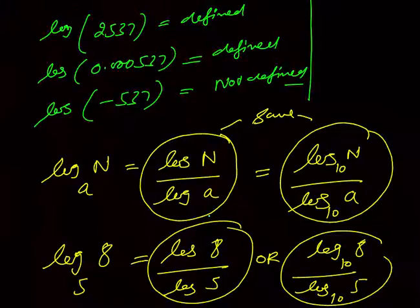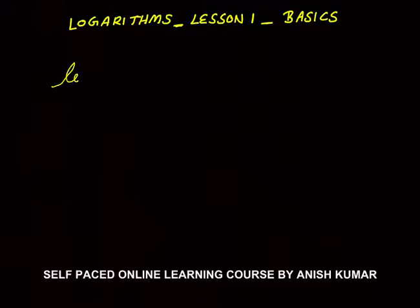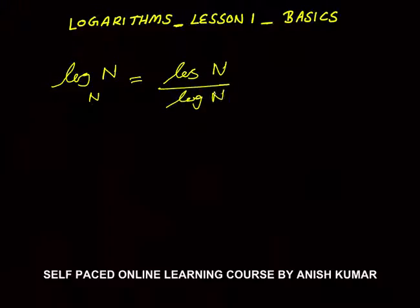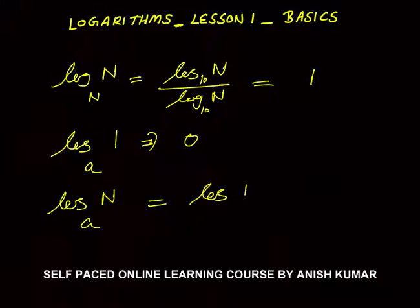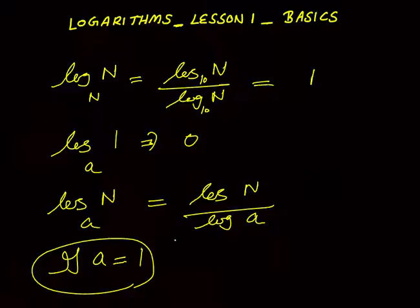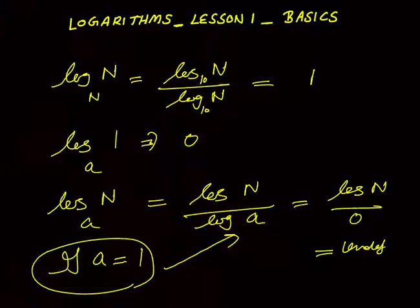Now, what about log of n to the base n? Expanding this: log(n) / log(n) = 1. If the base and number are both the same, the value is 1. What about log of 1 to the base a? This will be 0 — log of 1 is 0. If the base a were 1, then log(n) / log(1) = log(n) / 0, which is undefined. That's why the base can't be 1. So the base must be a positive real number except 1.